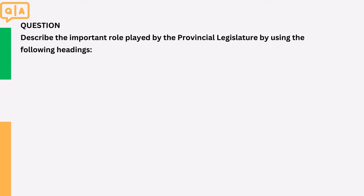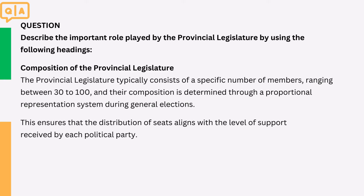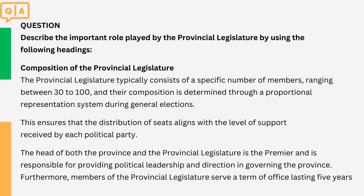Question: Describe the important role played by the provincial legislature. The provincial legislature typically consists of a specific number of members ranging between 30 to 100, and their composition is determined through a proportional representation system during general elections. This ensures that the distribution of seats aligns with the level of support received by each political party. The head of both the province and the provincial legislature is the premier, who is responsible for providing political leadership and direction in governing the province. Furthermore, members of the provincial legislature serve a term of office lasting five years.